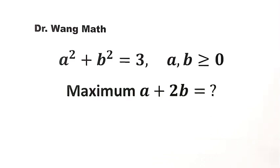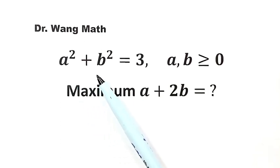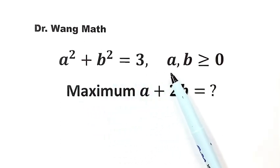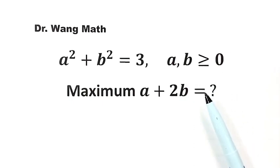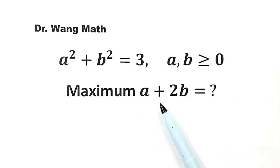In this video, we solve a question from the Chinese Math Olympiad. Given the equation a squared plus b squared equals 3, where a and b are both greater than or equal to 0, what is the maximum value of a plus 2b?